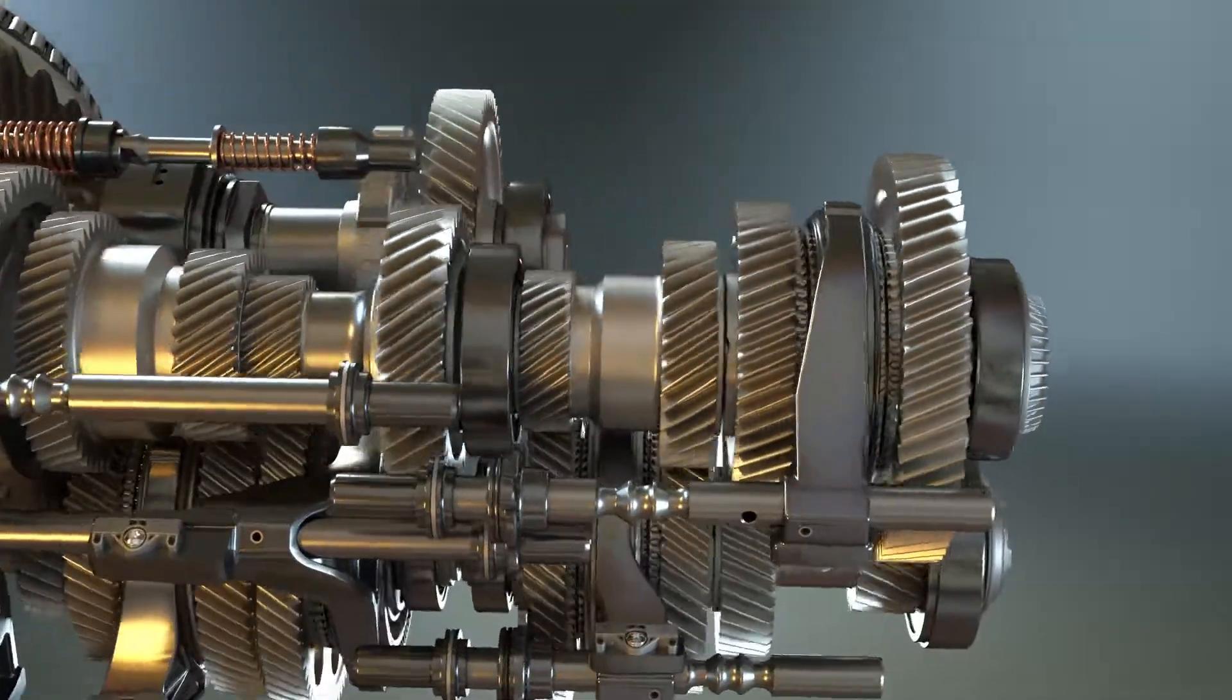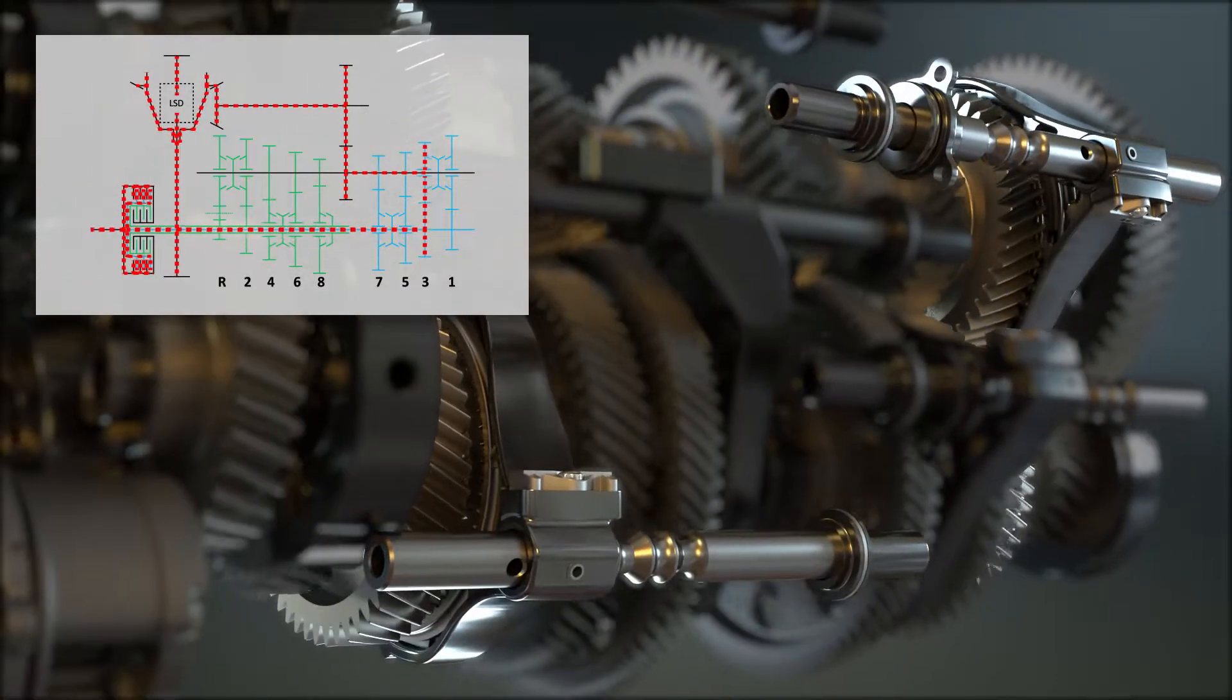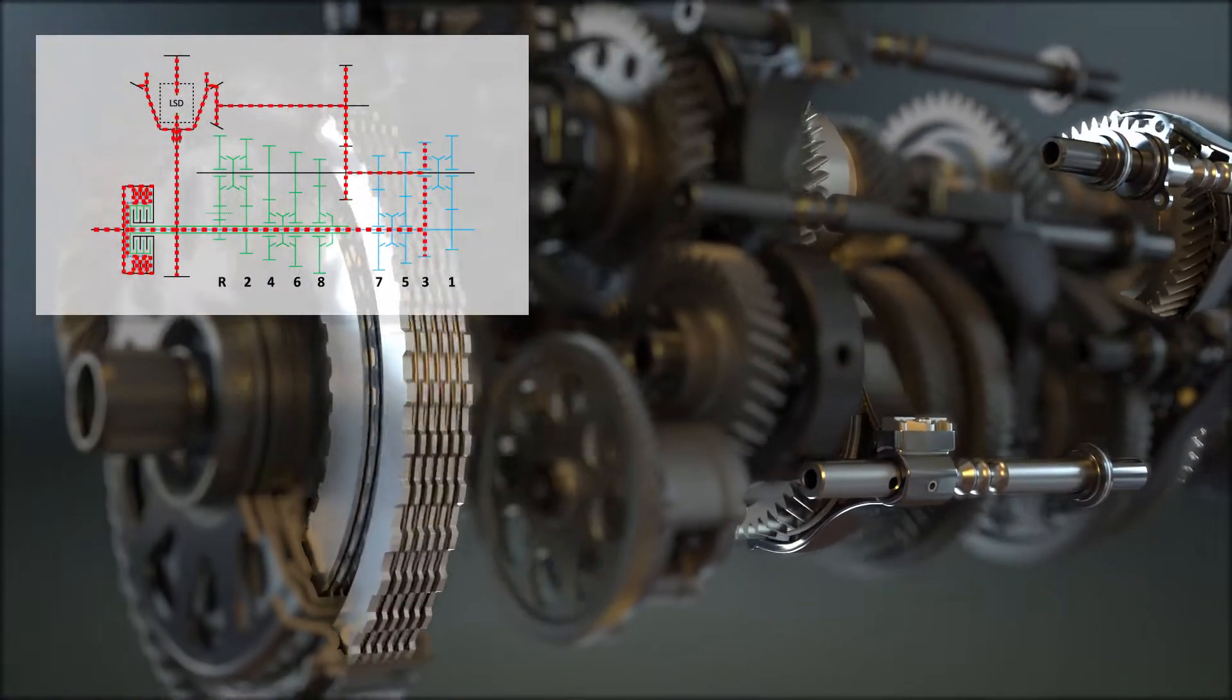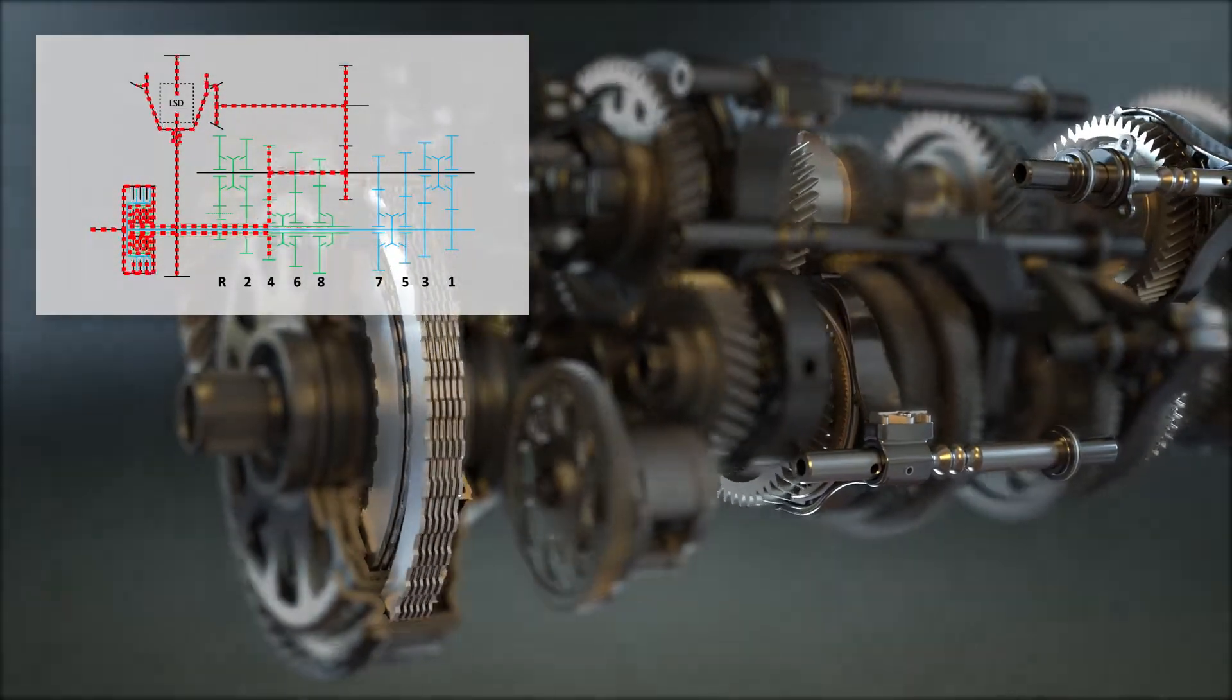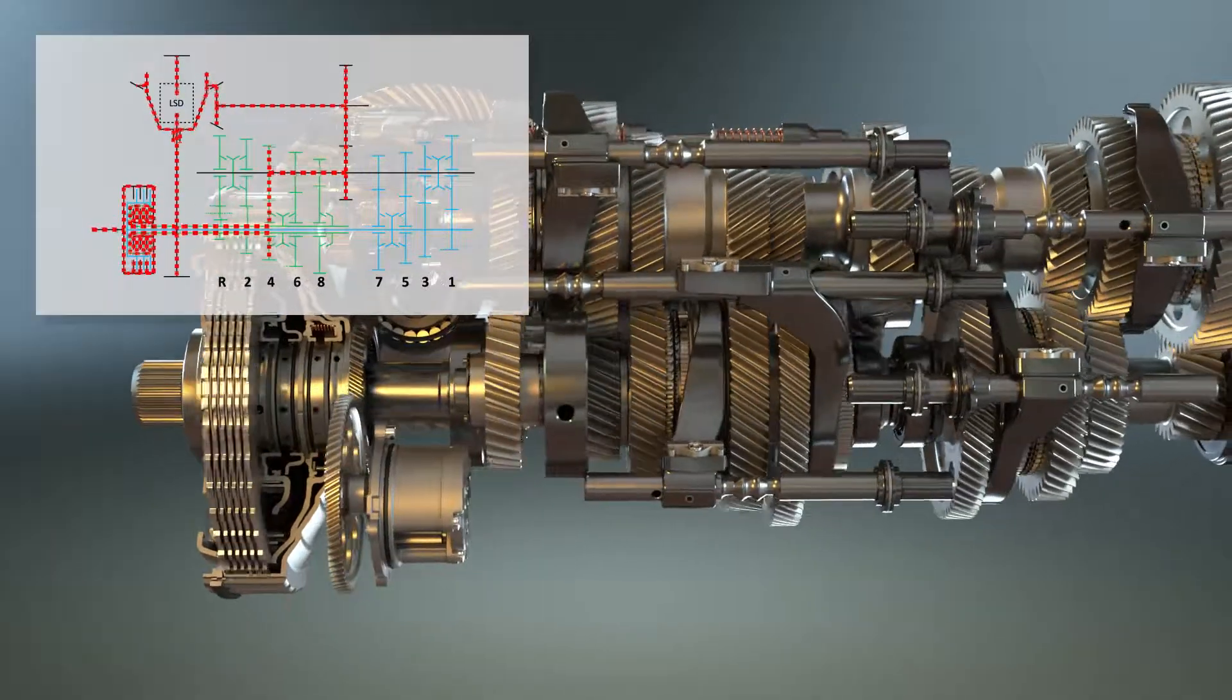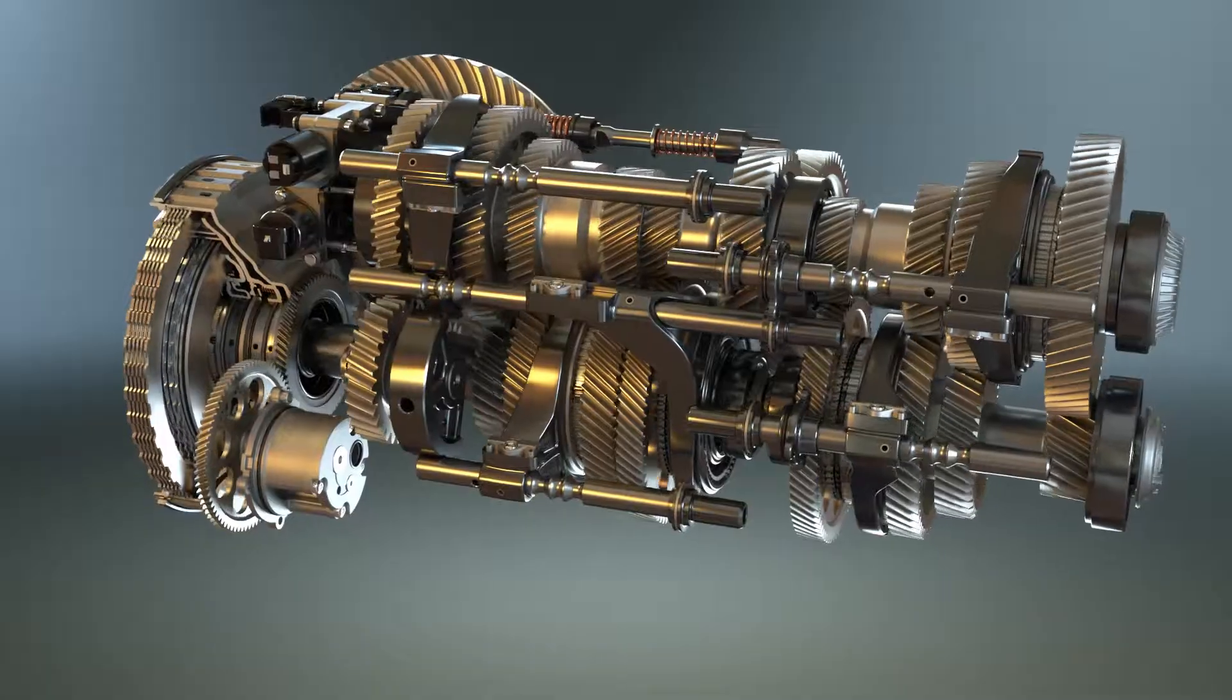When transmitting torque through one gear set, say third gear, the computer-controlled system pre-selects fourth gear on the even set. By engaging one clutch and disengaging the other, gear ratios change seamlessly, creating lightning fast shifts less than 100 milliseconds, while delivering constant torque and power to the wheels.